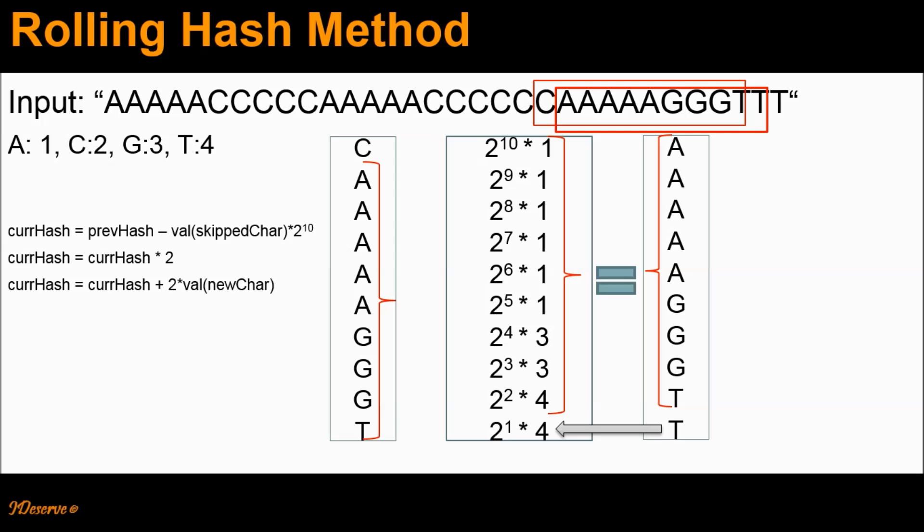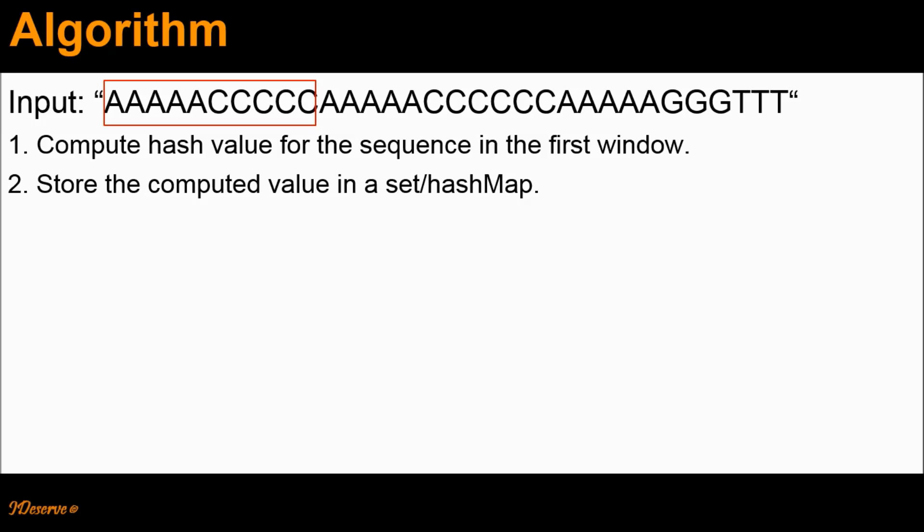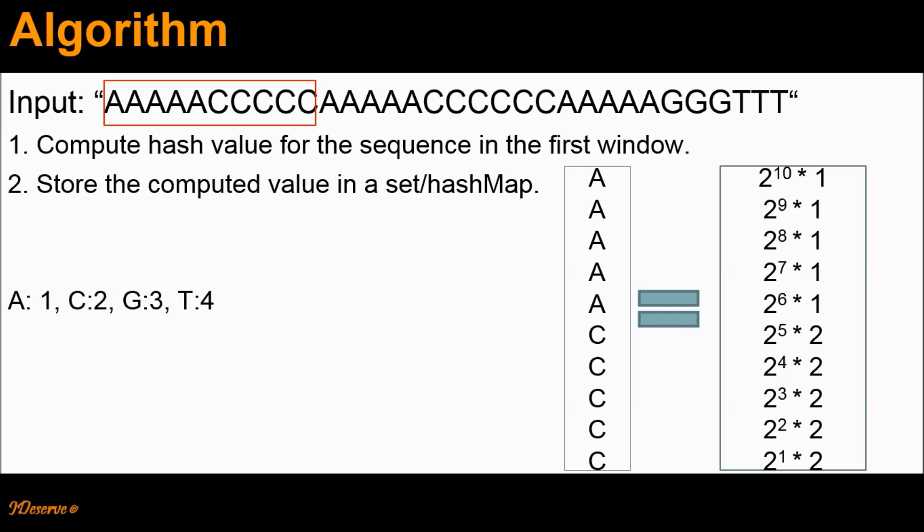Now let's look at the main algorithm which makes use of this rolling hash method. In this algorithm, we compute the hash value for the sequence in the first window — that would be the first 10 letters — and then store that computed value in a set or hash map. To compute the hash value for this sequence: we do 2^10 × 1 where 2^10 is the weight for the first letter and 1 is the value of the first letter A, plus 2^9 × 1 because the second letter is again A.